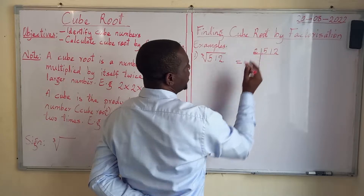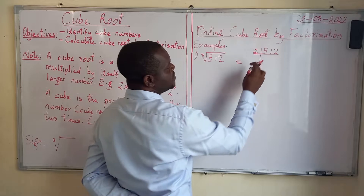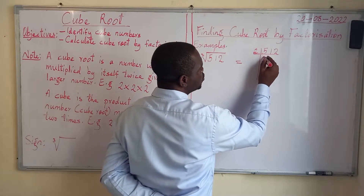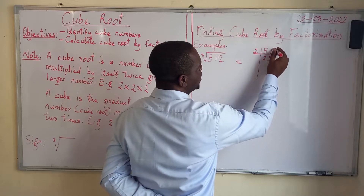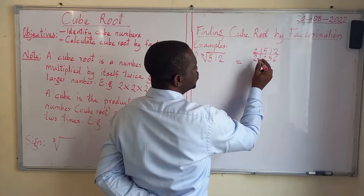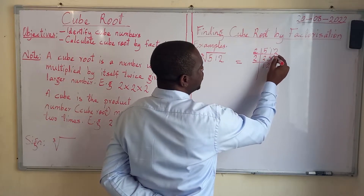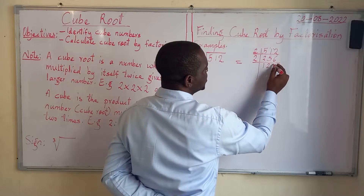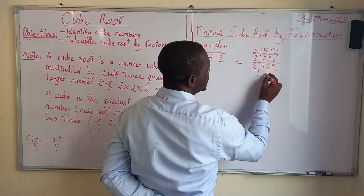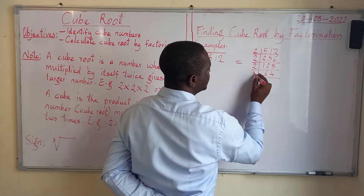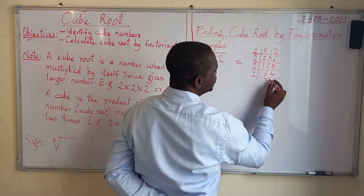We write 2 out and begin dividing. 512 divided by 2 is 256. 256 divided by 2 is 128. 128 divided by 2 is 64. 64 divided by 2 is 32. 32 divided by 2 is 16. 16 divided by 2 is 8. Go gradually so you don't make mistakes.